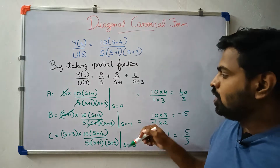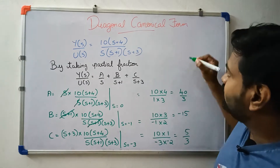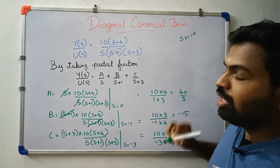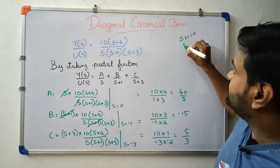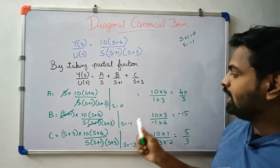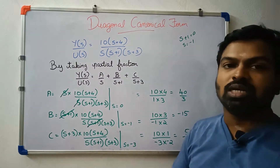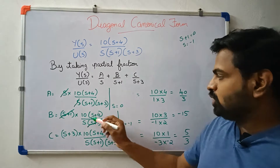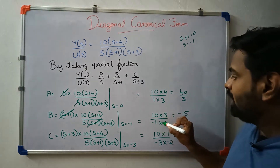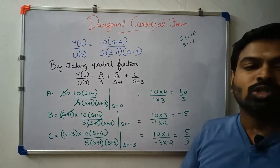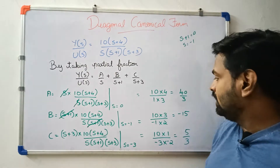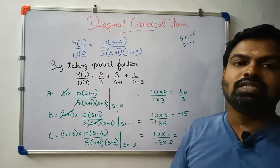S is equal to minus 1. We substitute: 10 into 3 by minus 1 into 2. The value of B is equal to minus 15.